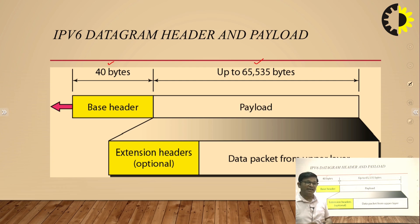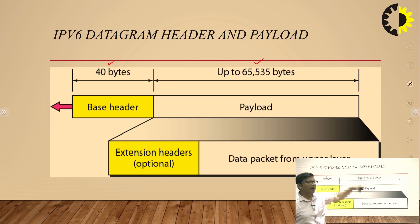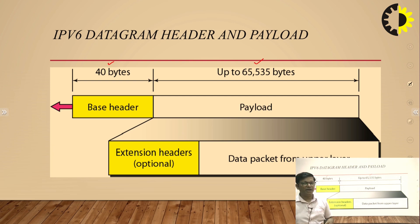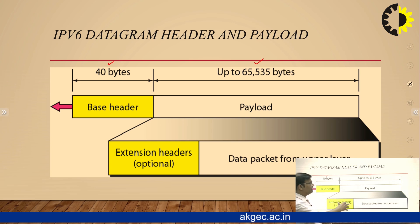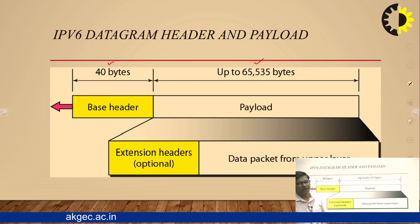IPv6 uses extension headers. The extension header is a basic feature where we do not need a head and trail on every piece. In IPv4 there are fixed packet sizes, so for a large packet each frame has a head and trail and each packet is treated as an individual frame. In IPv6 there is an extension header, so the main head is one and the tail is last, and large data can be broken into several frames transmitted one by one.